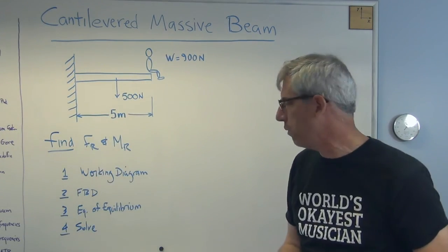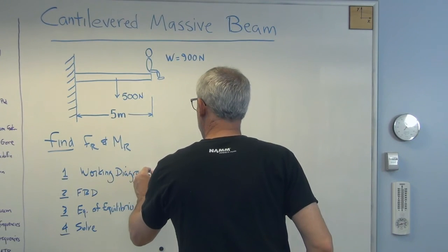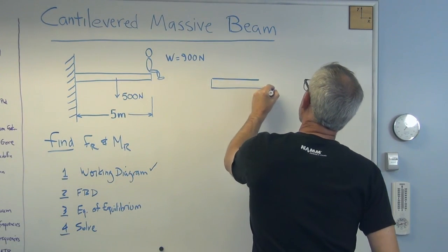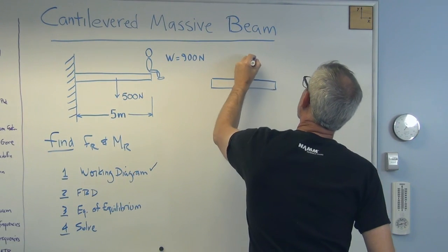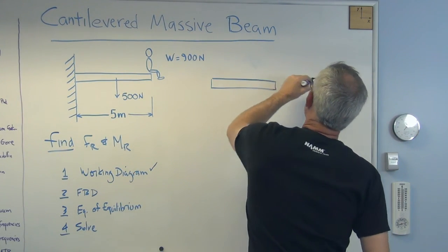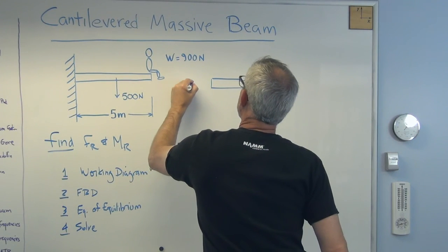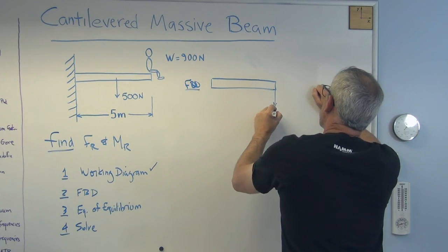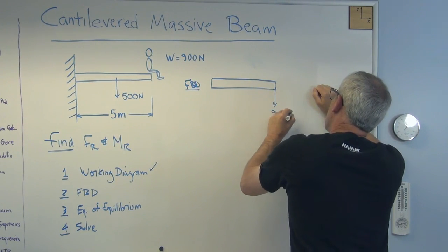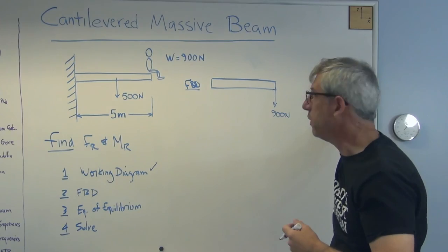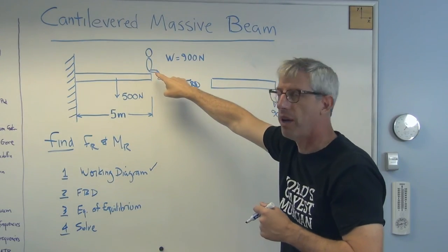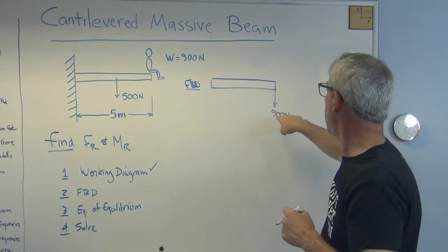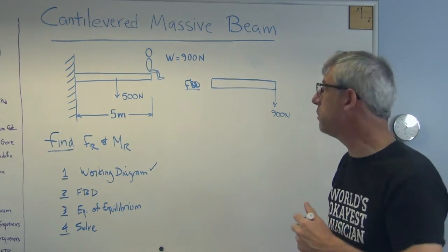What would the free body diagram look like? I'll write FBD right there. I don't have the biggest board here. There's the weight of the payload, the professor. I actually drew a little stick figure professor there. We've replaced that with just an arrow showing the load. This is what I mean when I say it's a little more abstract.